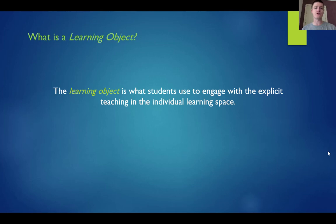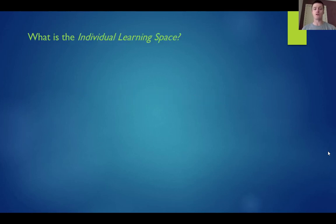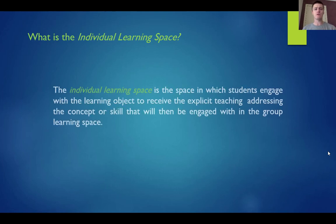Students will engage with that learning object in the individual learning space. The individual learning space is wherever students happen to engage with the learning object to receive that explicit teaching. The actual physical space might be at home, but it also might be on the bus, in the school library, or it may well be in class.